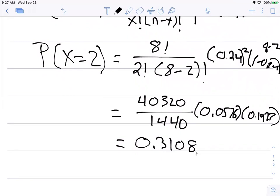This says that if we sampled or revisited eight facilities, the probability that two of them would be issued a violation would be 0.3108.